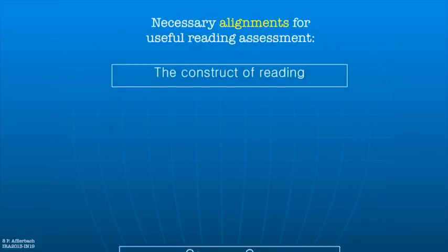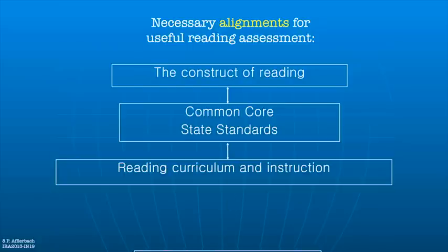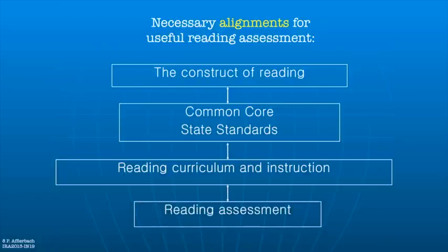These are really important alignments that should exist in our schooling systems. The construct of reading — the amassed understanding of what reading is, all the research results, experienced teachers' insights — should inform what we focus on when creating standards like the Common Core. If you read the Common Core standards, not all of what we know about reading got paid attention to, unfortunately. Nevertheless, the Common Core standards do derive from some aspects of what we know about the construct of reading, and it's really important that curriculum and instruction maps back up to those standards.